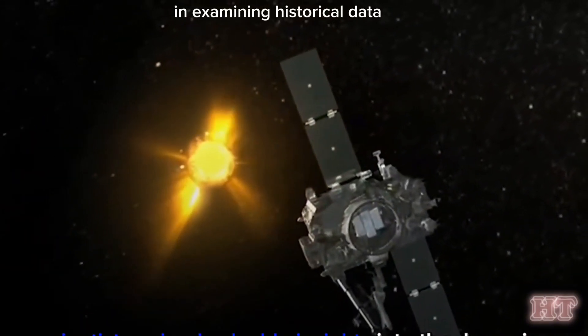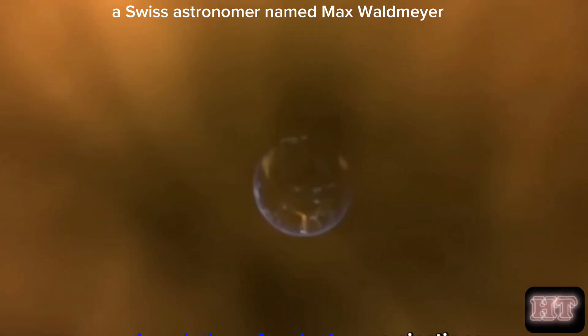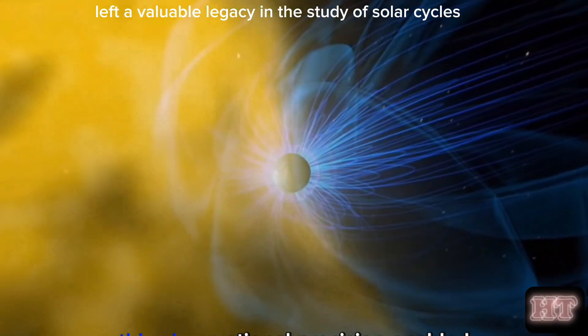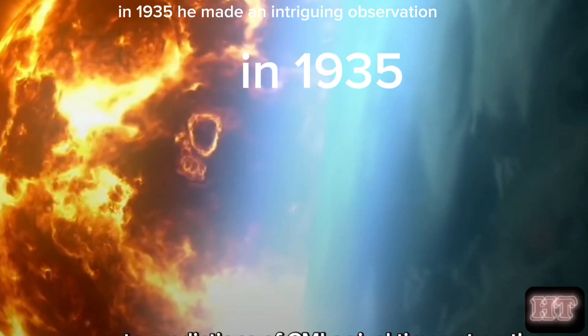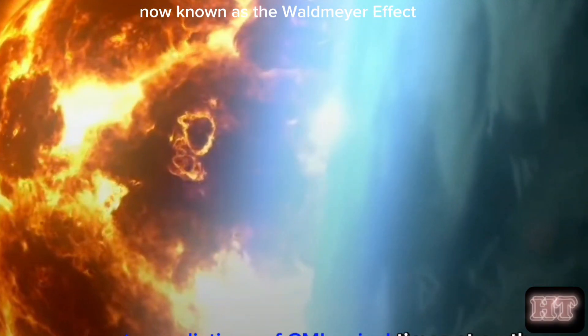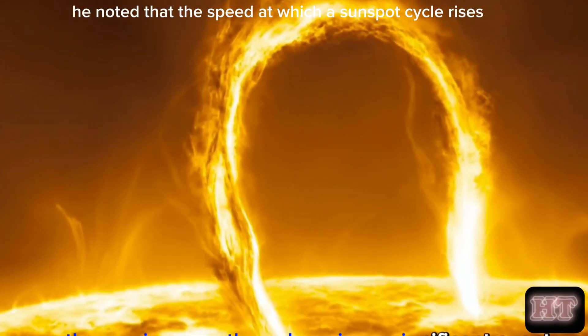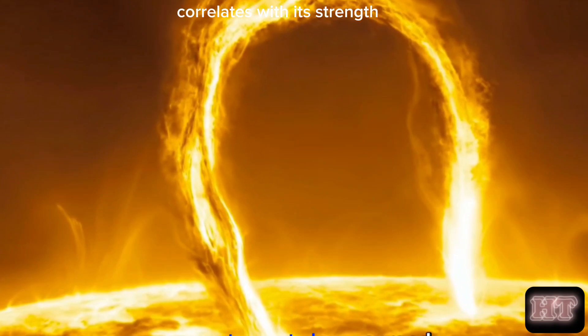In examining historical data, a Swiss astronomer named Max Waldmeier left a valuable legacy in the study of solar cycles. In 1935, he made an intriguing observation now known as the Waldmeier effect. He noted that the speed at which a sunspot cycle rises correlates with its strength. Faster rising cycles tend to be stronger.